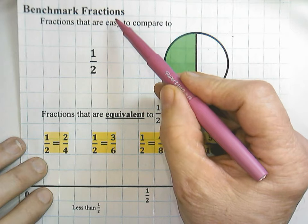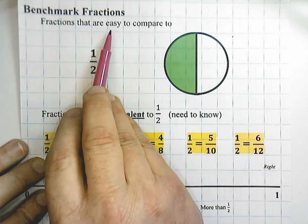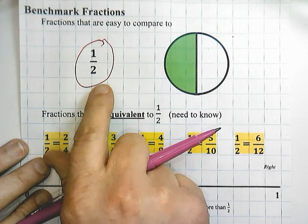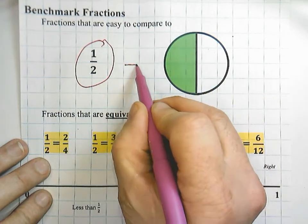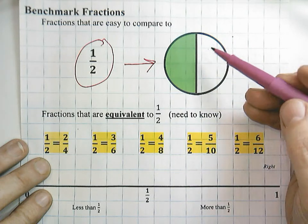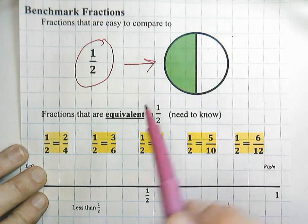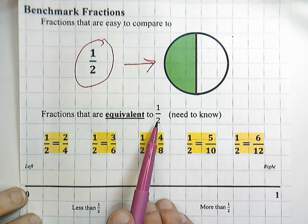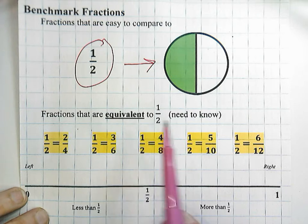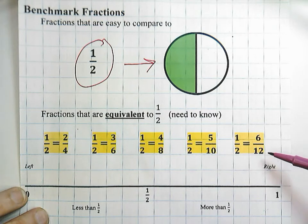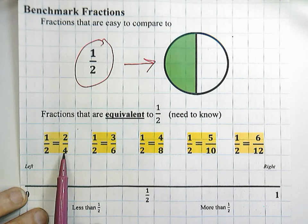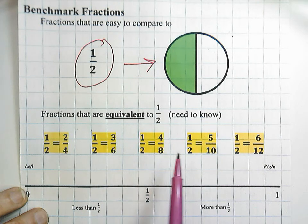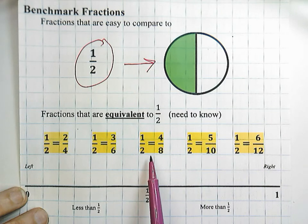Our strategy today is benchmark fractions. Benchmark fractions are fractions that are really easy to compare other fractions to. Our benchmark fraction is one-half, and that's really the fraction we want to relate to. Most people can easily relate to half, whether it's half of a pizza or half of a pie. It's important that you know fractions equivalent to one-half. For this lesson, targeted at fourth grade, we go up to fractions with denominators of 12. So two-fourths, three-sixths, four-eighths, five-tenths, and six-twelfths are all equivalent to one-half.